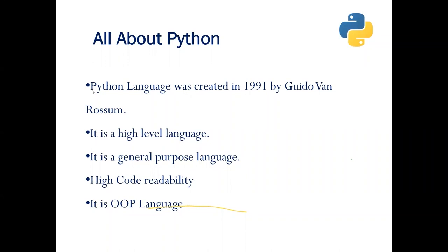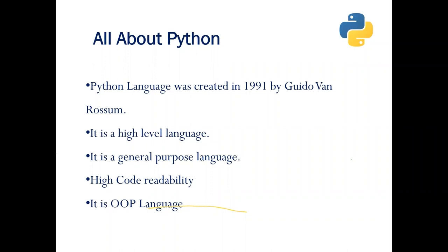So why did Guido van Rossum want to create Python when people were already using C and Java? Why was there a need to create Python? The reason is that those who have coded in C, C++, or Java know that even for adding simple code, you have to write multiple lines. Even a simple program to print 'Hello World' requires importing multiple packages and the code becomes seven to eight lines long.